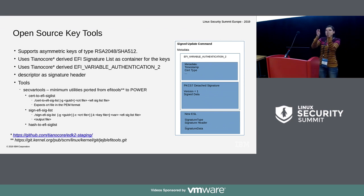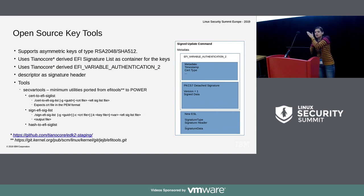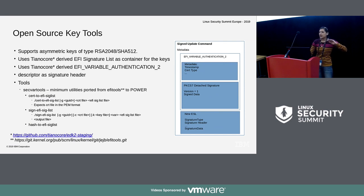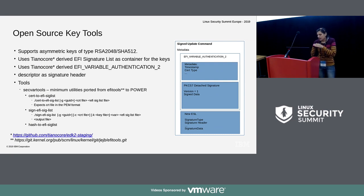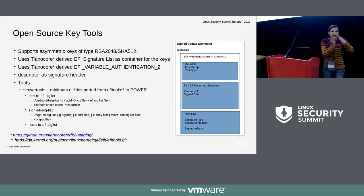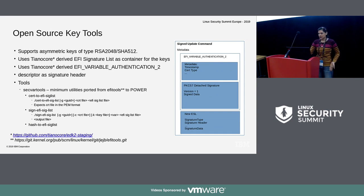Using these utilities, I generate a certificate, generate an ESL, and generate a signed command. It will have a header structure — authentication 2 descriptor — with metadata, then a PKCS7 detached signature, and at the end appended with the new keys ESL which you want to get updated onto the database.